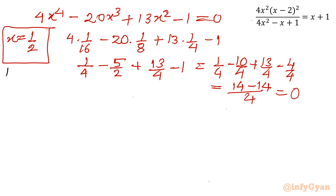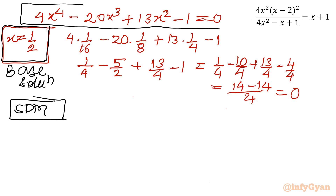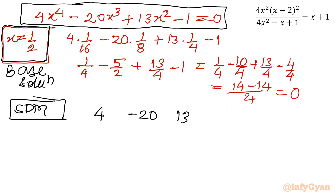We will now apply synthetic division with x equals one half. Writing all coefficients for 4x⁴ minus 20x³ plus 13x² plus 0x minus 1: the coefficients are 4, minus 20, 13, 0, and negative 1.